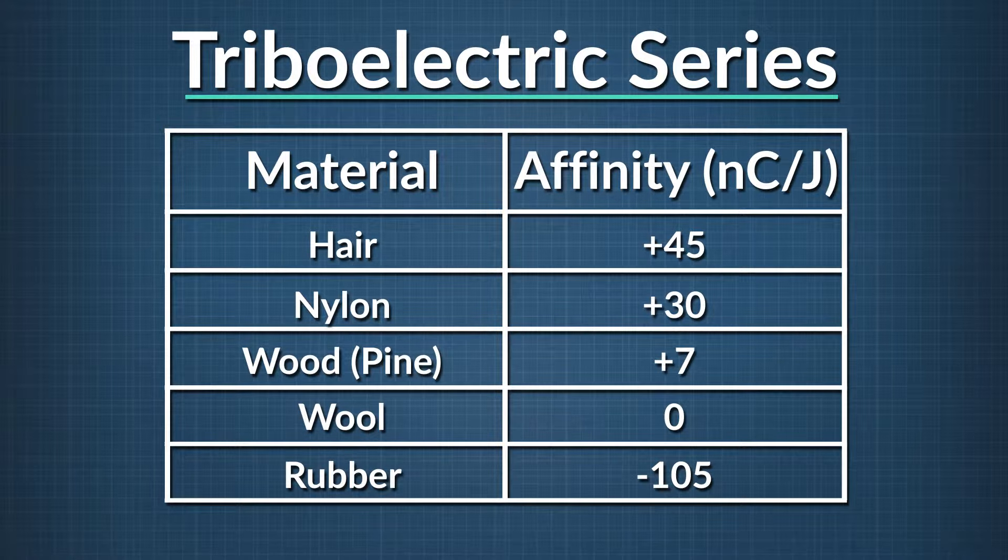We figure out which material is more likely to take electrons by looking at the triboelectric series. It's a table of materials that are ranked by how easily they become charged by friction. The more charge affinity a material has, the more likely it is to steal electrons when rubbed against another material.